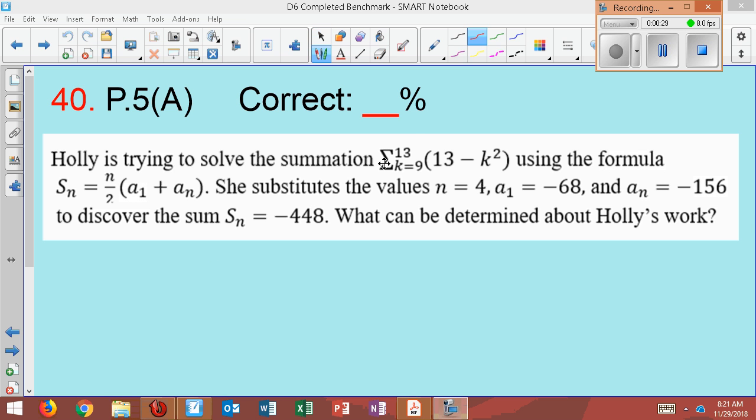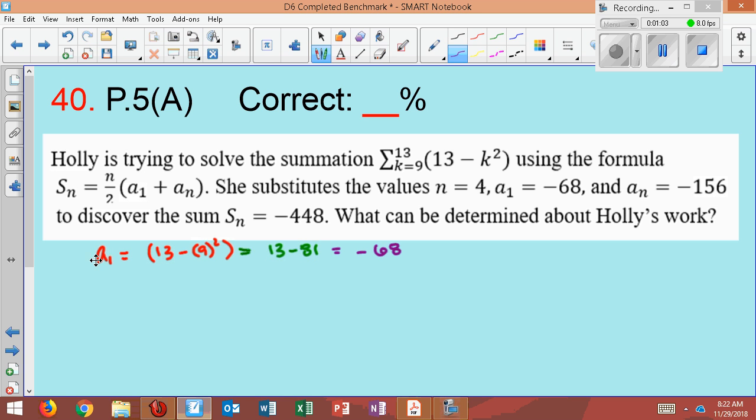Well, first let's check her work. The way sigma works is you plug in the numbers from 9 all the way to 13. To find the first term, plug in this bottom number 9 into the equation. So you'd have 13 minus 9 squared. 9 squared is 81, so this would equal 13 minus 81, which simplifies to negative 68. That's a₁, which is what Holly had. So that's good, there's no mistake there.